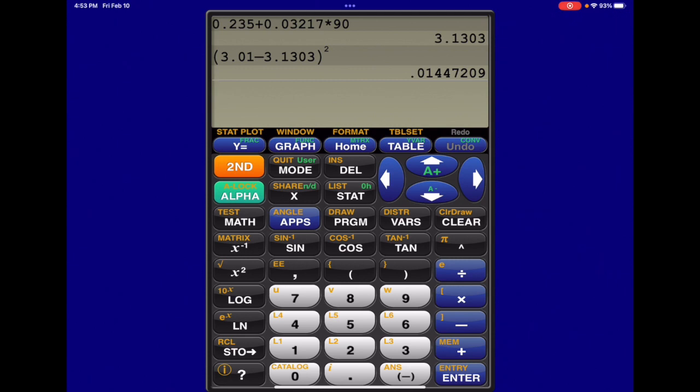So we get 0.0144 for our first four decimals, but we need to look at the fifth decimal place, which is a 7. And because that's bigger than 5, we're going to round up. So instead of 0.0144, we'll put 0.0145.